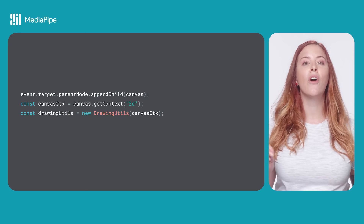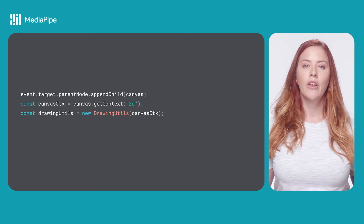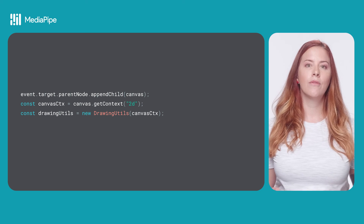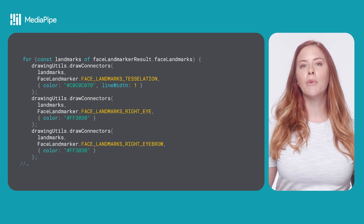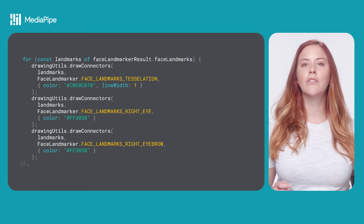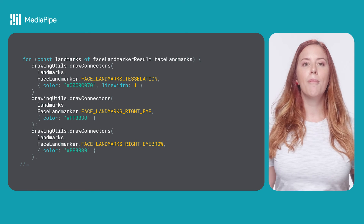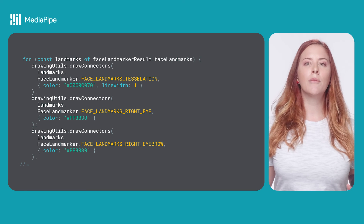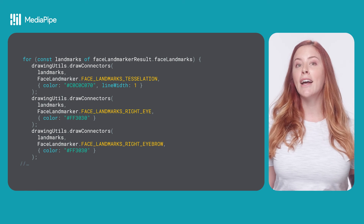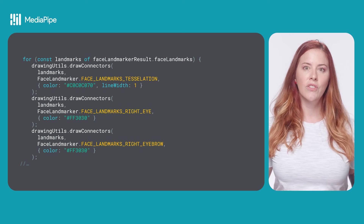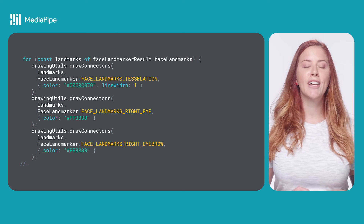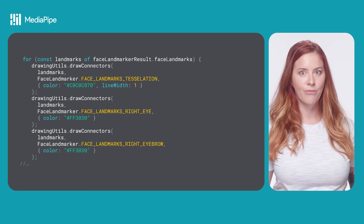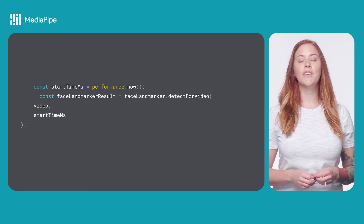The tasks vision package has a built-in helper function for drawing face landmarks on a canvas element. First, create an instance of the DrawingUtils class, then iterate through the face landmarks and call the DrawingUtils.drawConnectors method, passing the landmarks, the area that you want to draw like FACE_LANDMARKS_RIGHT_EYE, and the color of the connections. You can see all available attributes in the API documentation.